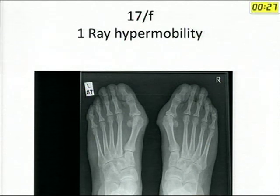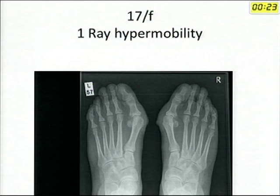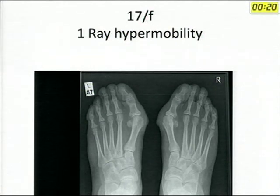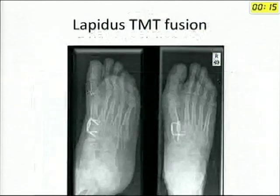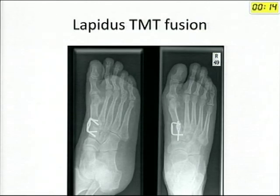This is another patient with hypermobility — a slightly different problem. The squeeze test on this side corrected all her deformity, so a simple scarf will not be helpful in this case. In such cases a TMT joint fusion is a better option.